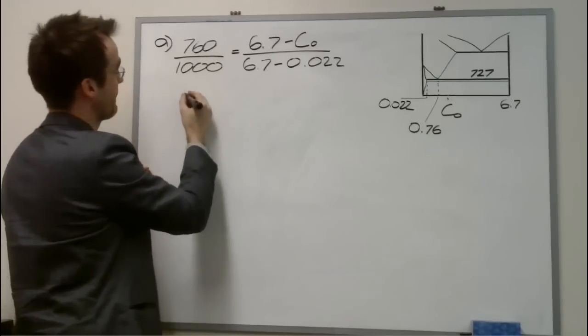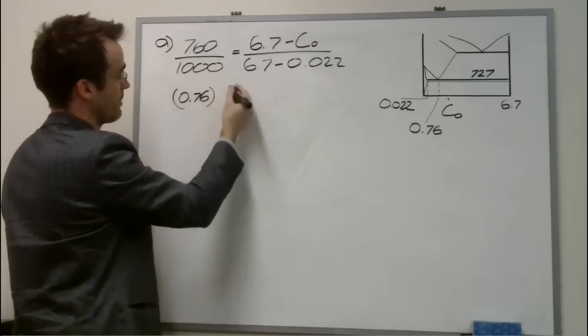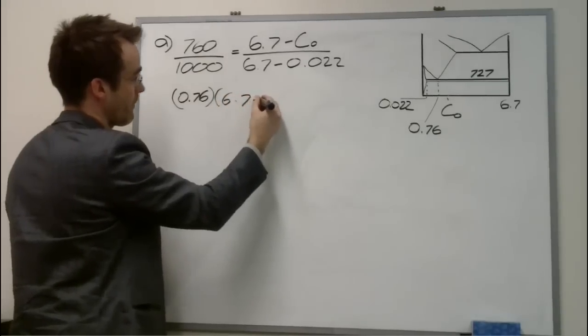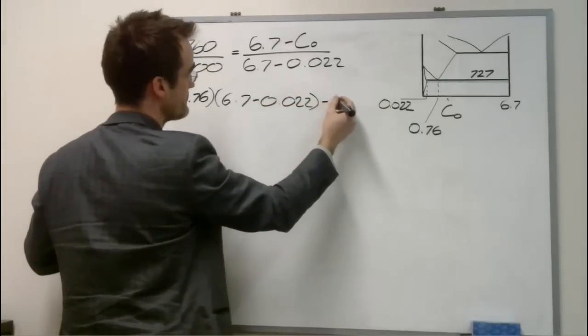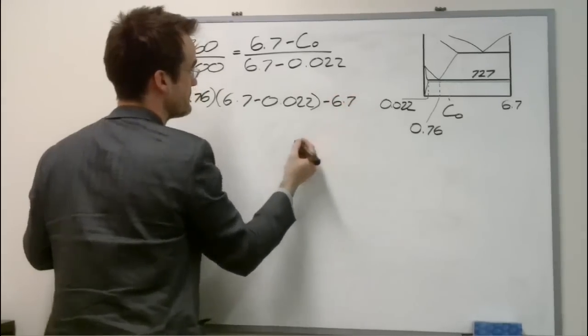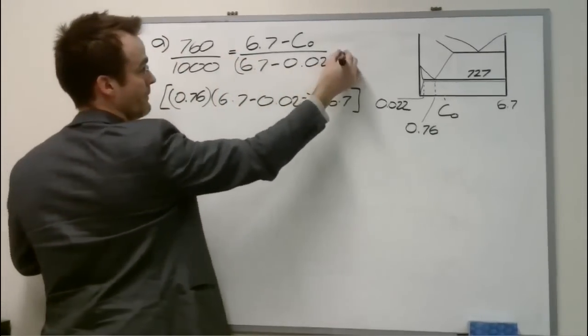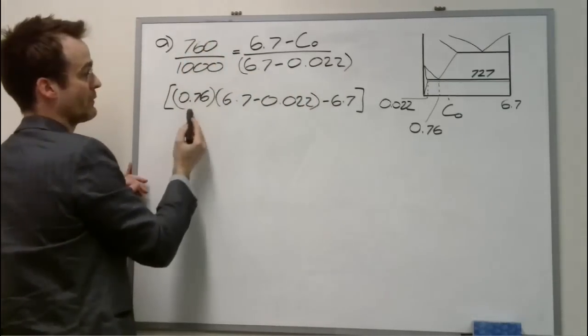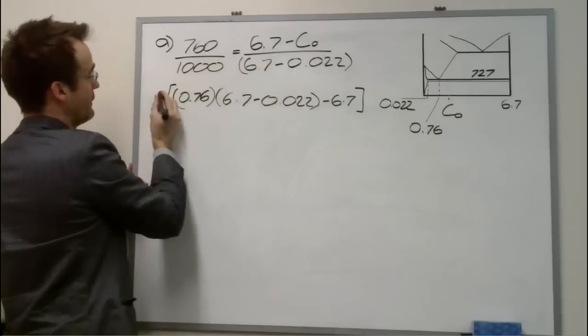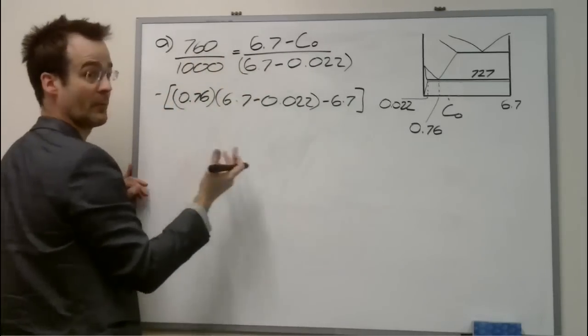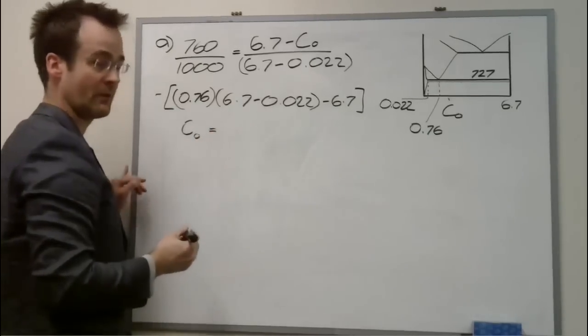So we can just do some simple math. So I've brought the denominator up, just turned this into a fraction, brought the denominator up, brought 6.7 across, and we'll eliminate the negative sign, or multiply both sides by negative 1, and then we can calculate directly what C-naught is.